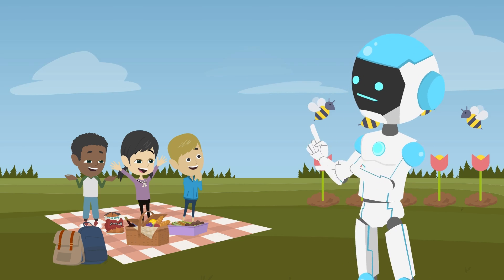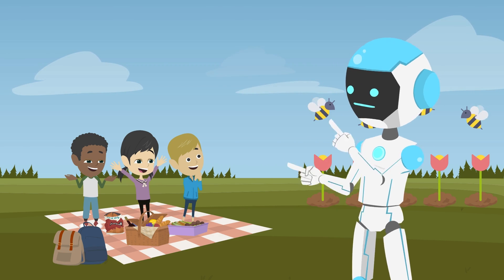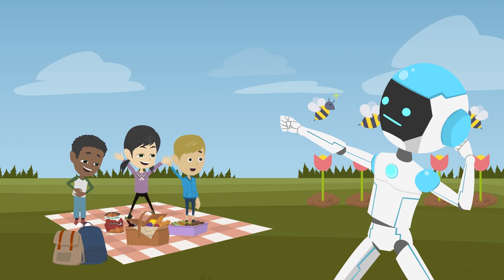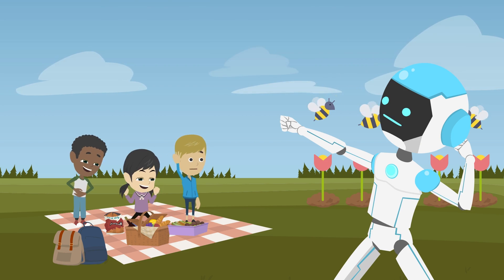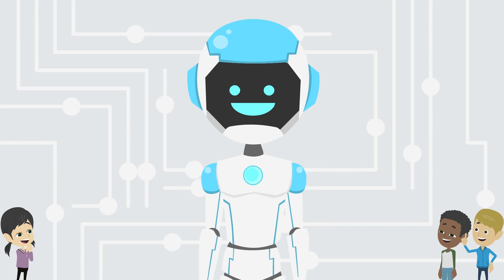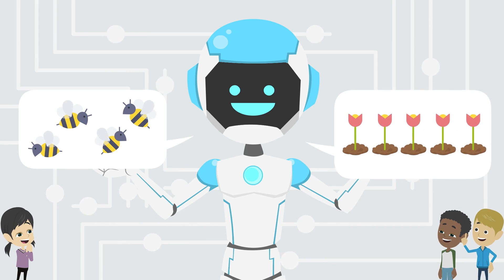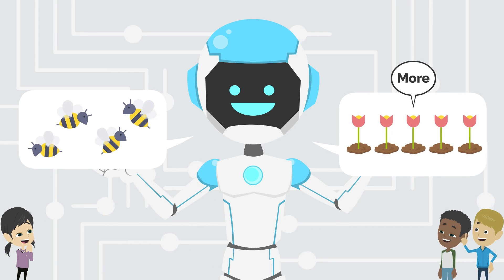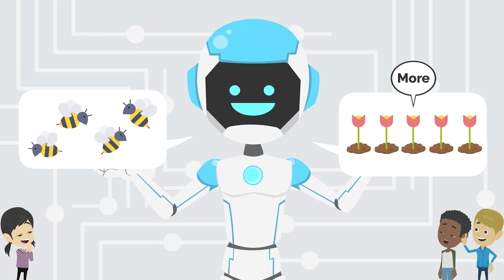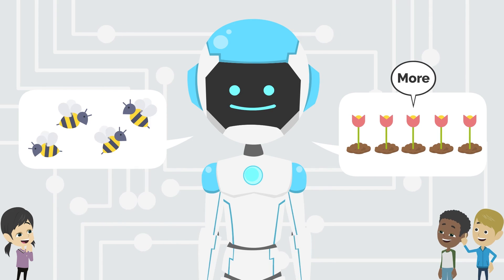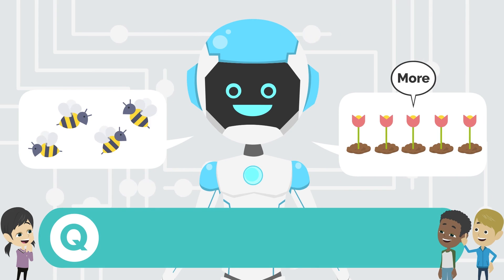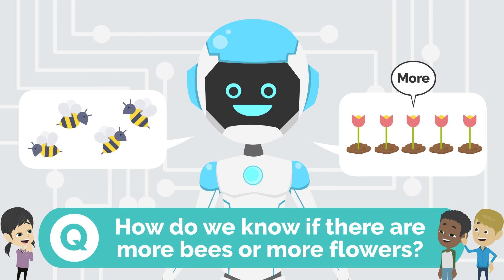That's a good idea. As you thought, for all the bees to land on the flowers, there must be more flowers than bees. Yes. So here is a question: how do we know if there are more bees or more flowers?